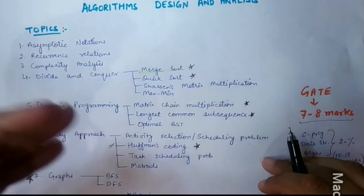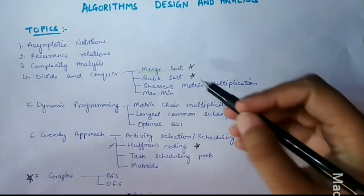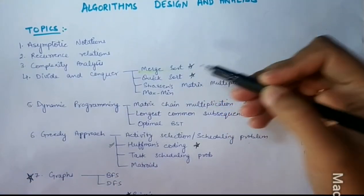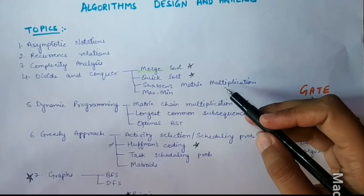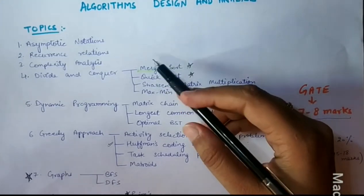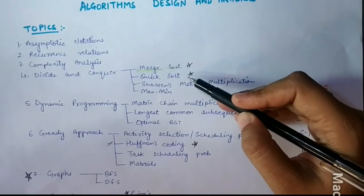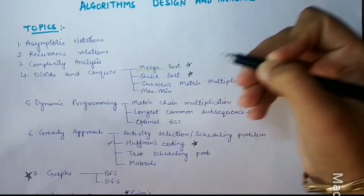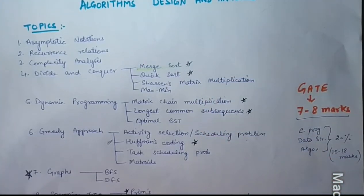Fourth topic is Divide and Conquer Algorithm, which includes merge sort, quick sort, Strassen's matrix multiplication and maximum. We have merge sort and quick sort from our GATE point of view, which is very important topic. We have to learn them with attention.